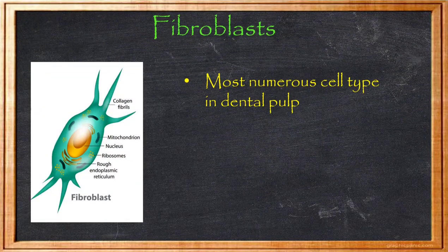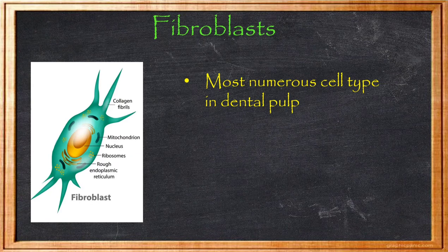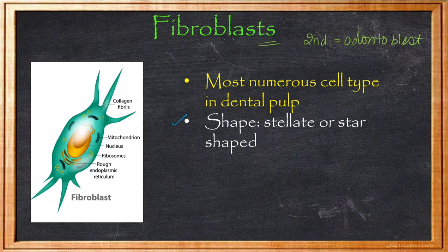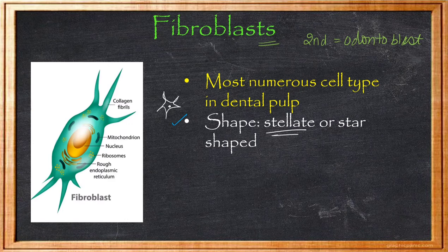Moving on to the next cell: Fibroblasts are the most numerous cell type in pulp. This has appeared as an exam question: 'Which cell is maximum present in pulp?' — the answer is Fibroblasts. The second most numerous cell type is Odontoblasts. Do not get confused between most numerous and second most numerous. Fibroblasts are star-shaped (also called stellate), with many processes resembling a star.